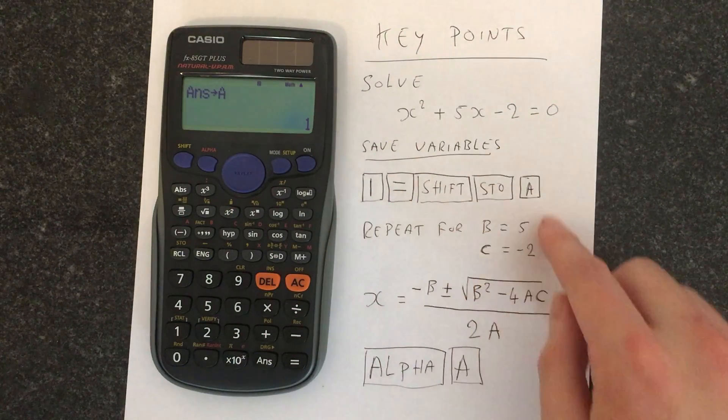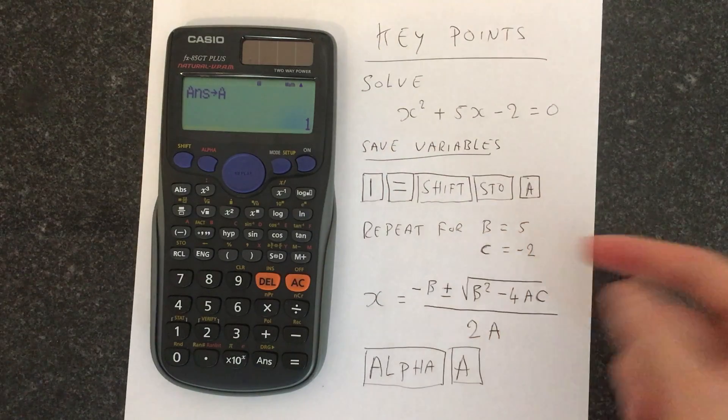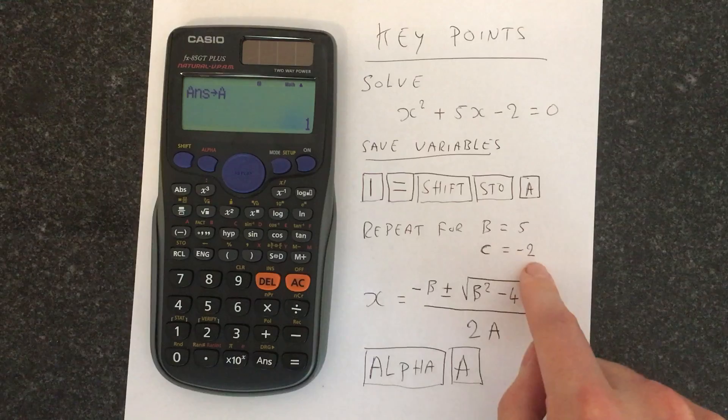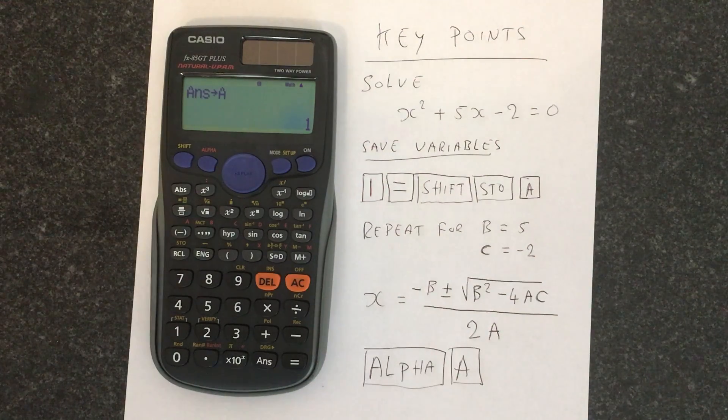So we're going to repeat this, but instead of pressing a, we're going to press b and then c. So we're storing 5 in the memory b, and then minus 2 in the memory for c.